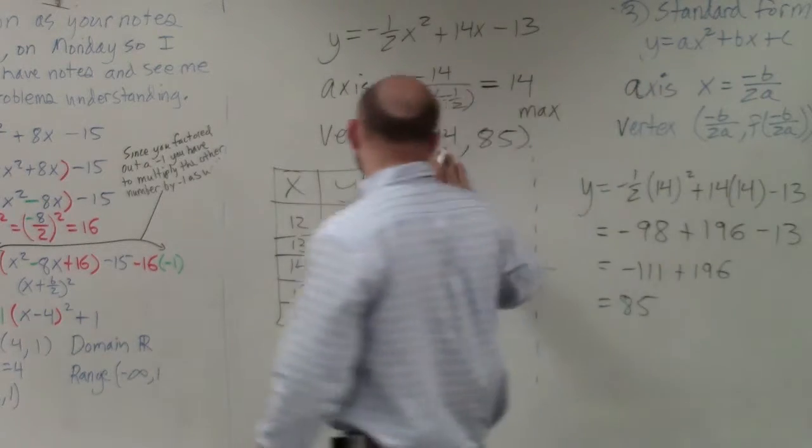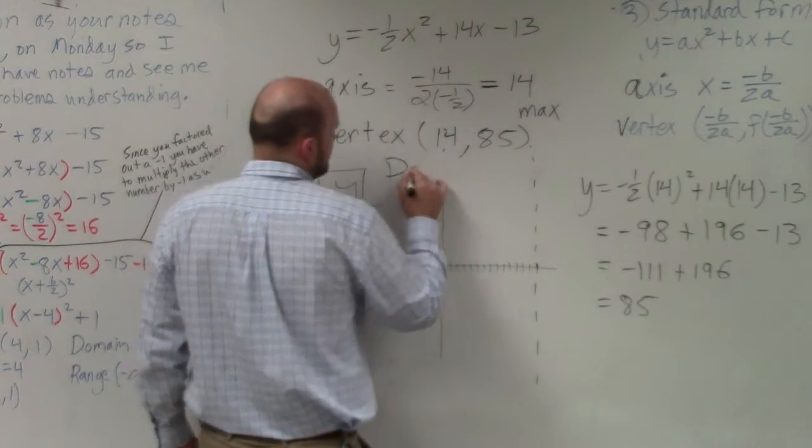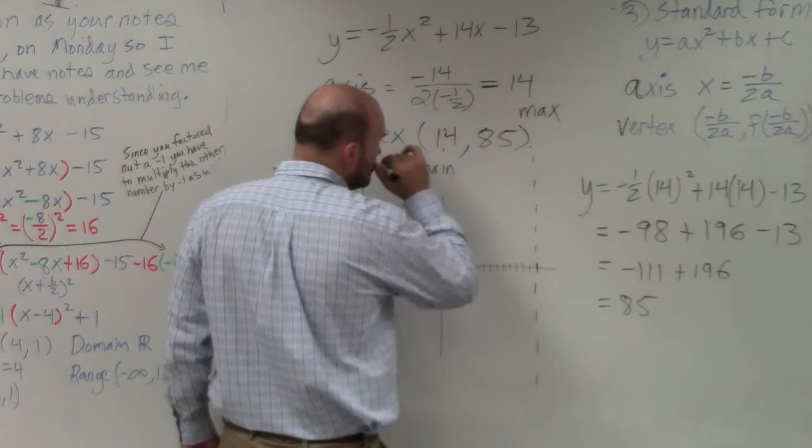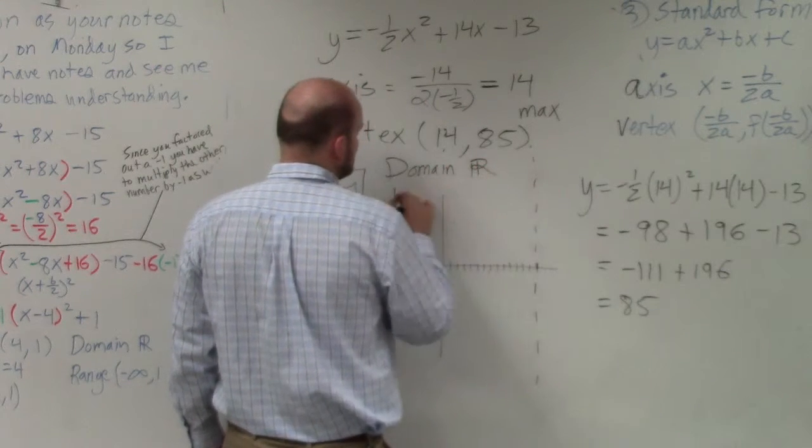It's 14, 85, but the problem will be... Going down. So is this a maximum or a minimum point? So it's a maximum. Correct. So that's a maximum point. Domain, we know is going to be all real numbers. Domain is going to be all real numbers.